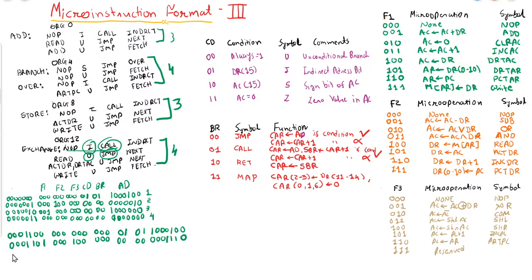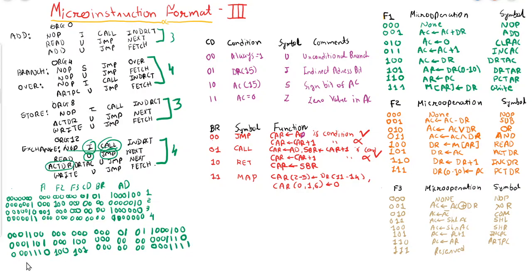The first operation at address 14 is AC2DR. AC2DR belongs to field 2, and its value is 101, so field 2 is 101. The next operation is DR2AC. DR2AC belongs to field 1, and its value is 100. There is no third operation, so field 3 will be 000. Then unconditional jump: 00, jump 00, and the next address will be 15.